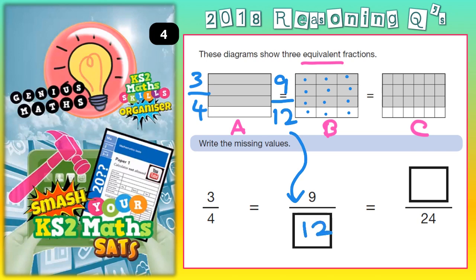As for diagram C, well this box is split into 24 parts which is where this 24 comes from here. Let's just double check. 1, 2, 3, 4, 5, 6, 7, 8, 9, 10, 11, 12, 13, 14, 15, 16, 17, 18, 19, 20, 21, 22, 23, 24. So that's where the 24 comes from but the number on top is how much of the diagram is shaded. How many parts of the diagram is shaded.